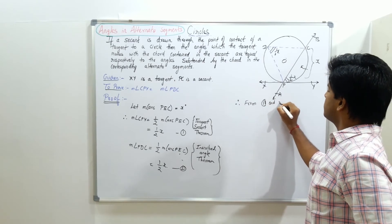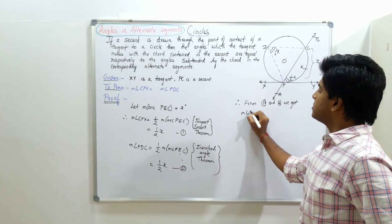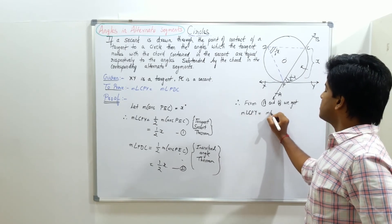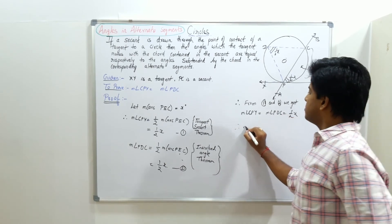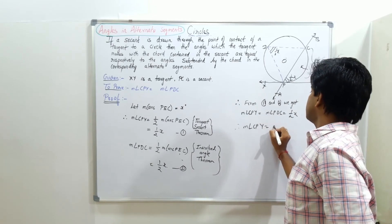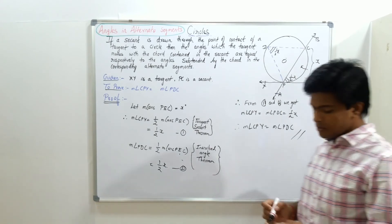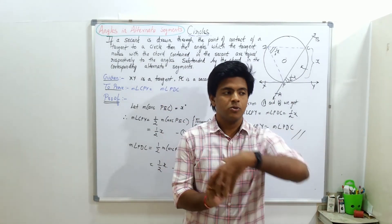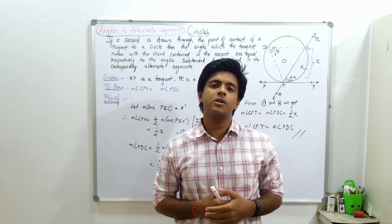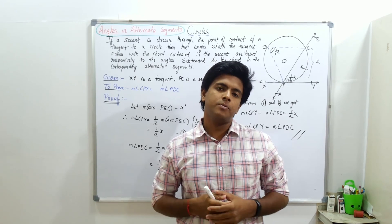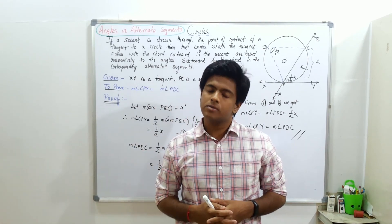From steps 1 and 2, measure angle CDY equals measure angle PDC, and both equal half of x. Therefore, measure angle CDY equals measure angle PDC. So this proves the theorem of angles in alternate segments. I hope you have understood this theorem. If you have any doubt, just comment so that I can help you understand it very easily. Thanks a lot.